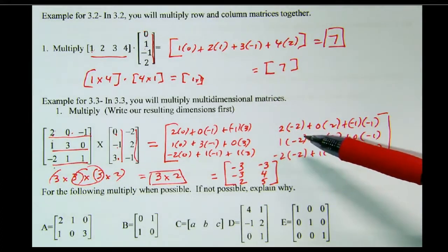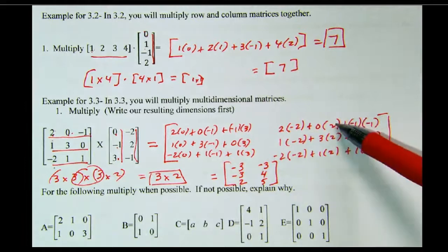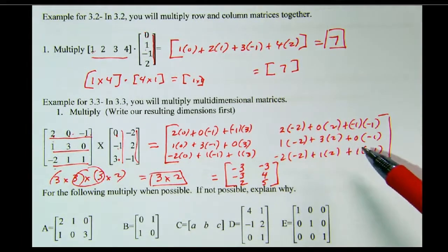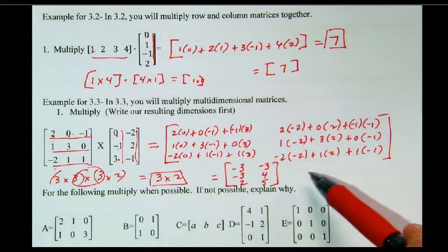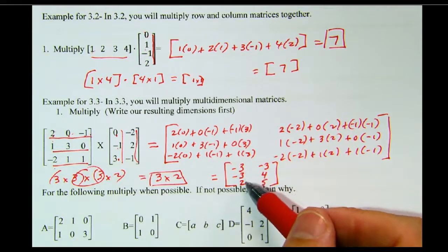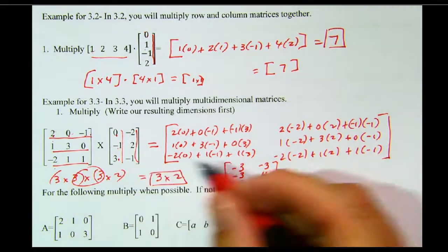So I took this row and multiplied by each one of these in the column. Negative 2, 2, negative 1. Negative 2, 2, negative 1. Then I simplified all these. Double check my work. Make sure I did this right. Negative 3, negative 3, 2. Negative 3, 4, 5. That is my resultant matrix when I do this multiplication.